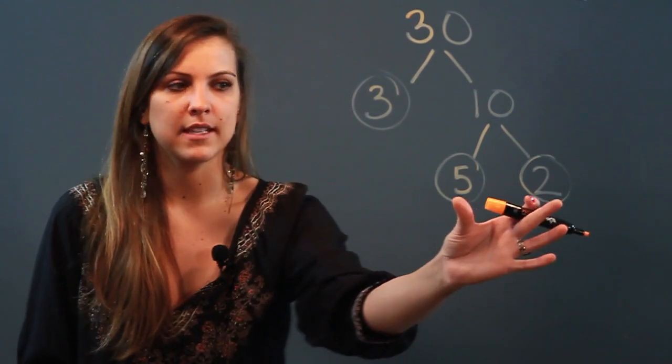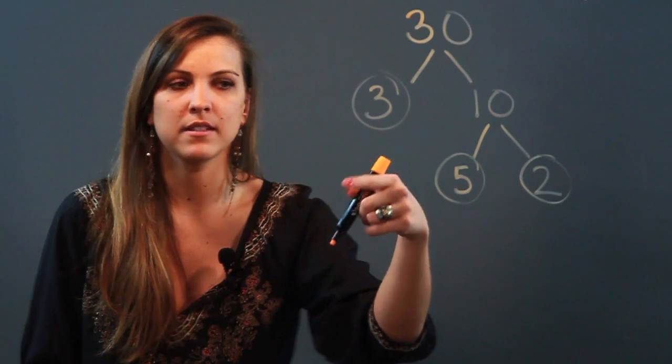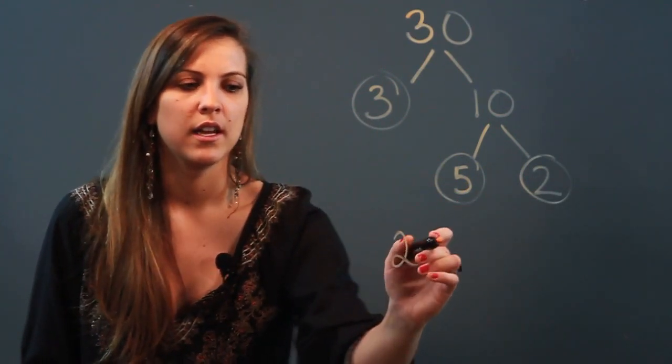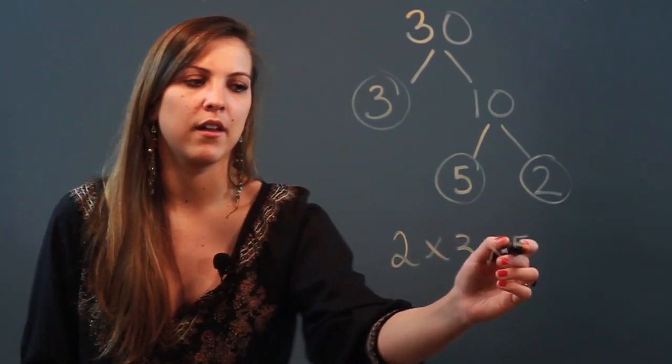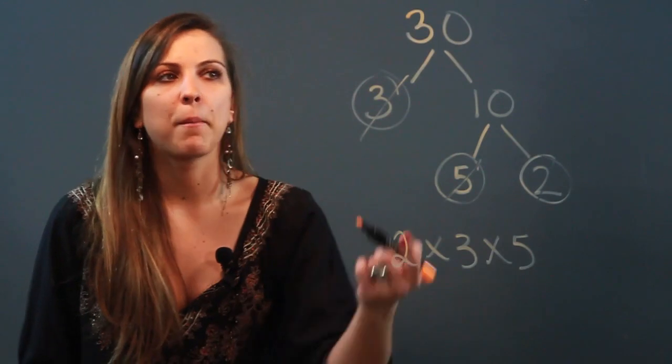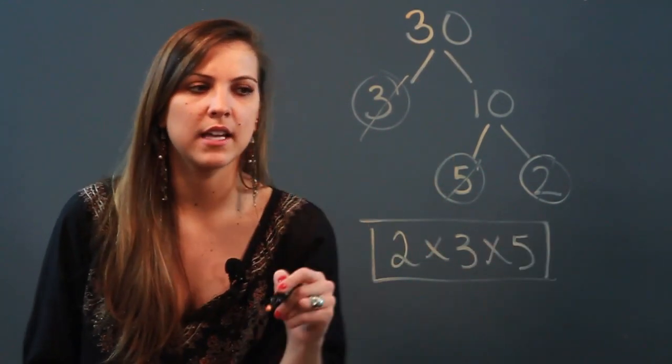Now that I'm done breaking it down, I'm going to rewrite these numbers in order from least to greatest: 2 times 3 times 5. You might want to cross it out every time you use it so you don't forget where you are. So the prime factorization of 30 is 2 times 3 times 5.